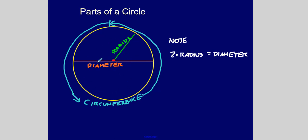The diameter of a circle is a line segment or chord that goes right through the center of the circle such that it touches the circle in two points. A radius is the distance from the center of the circle to a point on the circle, and is half a diameter, so two times radius equals diameter.